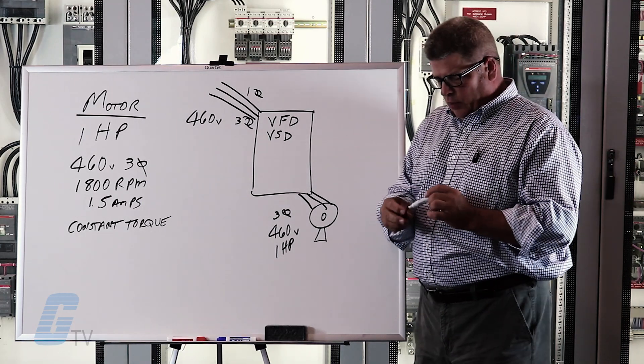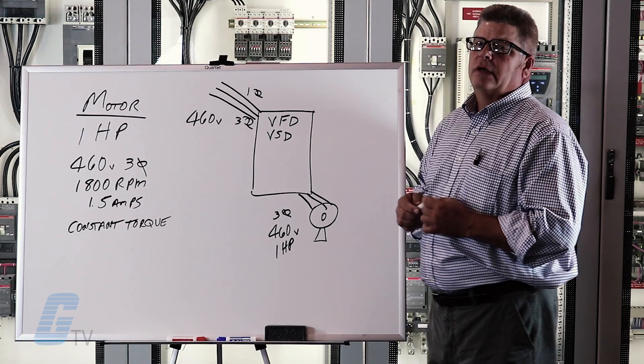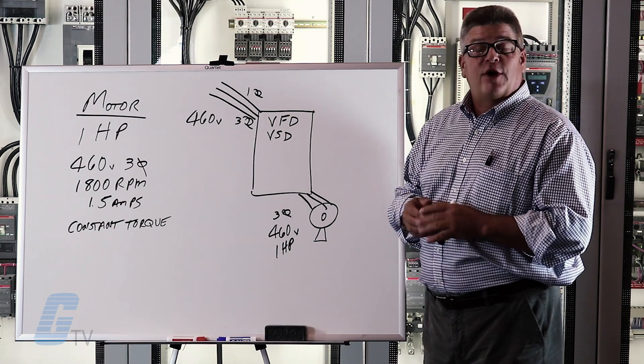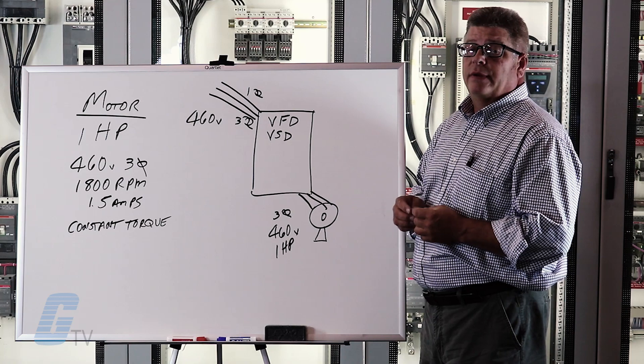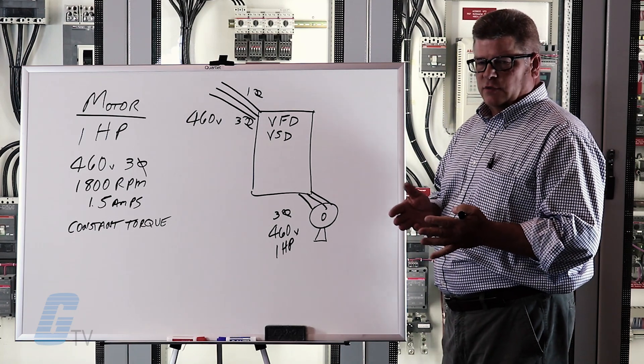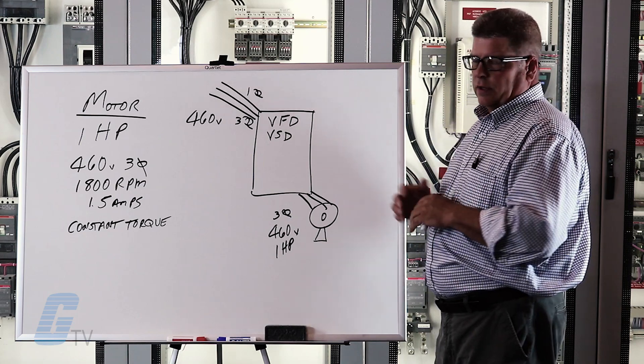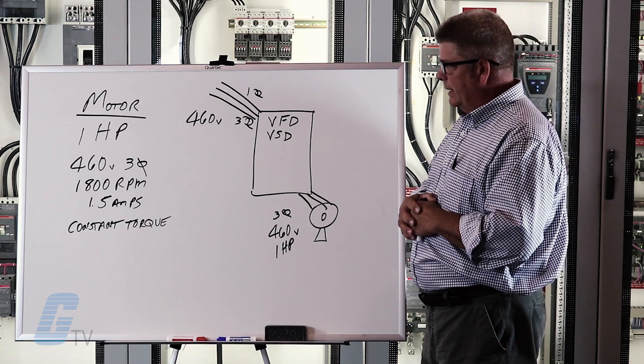Constant torque means that the motor needs to provide its full torque right from zero speed up to its full speed rating. The other option would be a variable torque load like a fan or a pump where you need minimal torque at zero speed and maximum torque at high speed. In our case today it's a constant torque conveyor that we are working on.